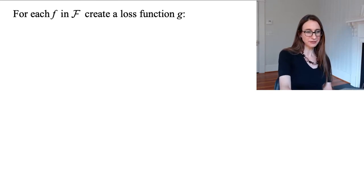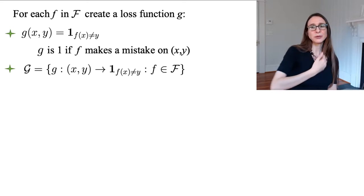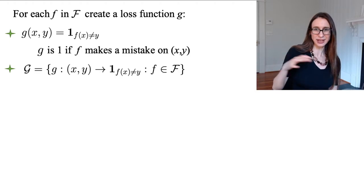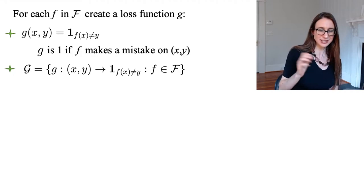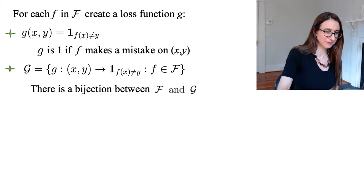So for each function in big F, we're going to create a loss function g, which just determines whether f made a mistake on that point. Remember f predicts negative 1 or 1, and y also is negative 1 or 1, and so g tells you whether f made a mistake on y. If we do that for each function f, we can create a whole bunch of these loss functions, and we can call that whole collection of loss functions big G. For each g in big G, it takes a data point and tells you whether its corresponding function in big F gets that data point correct.